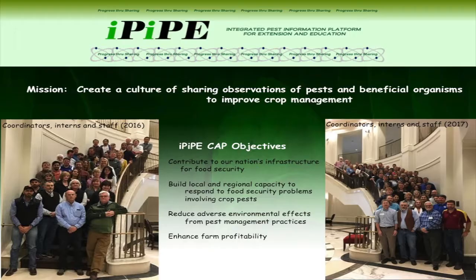I'm going to introduce both Scott and Julie. Scott Isard is a professor of aerobiology in the Department of Plant Pathology and Environmental Microbiology at Pennsylvania State University. Julie Gollard is the national coordinator for IPIPE. They've collaborated in leading teams to operate the soybean rust information system, the IPM pipe, and currently IPIPE. The $7 million five-year IPIPE cap is currently in its third year, and we're going to be seeing today the results of the labor for the last three years. It's beautifully impressive. Welcome, Scott and Julie.